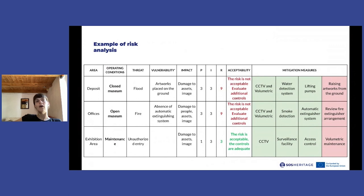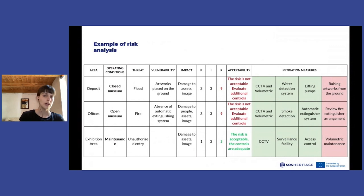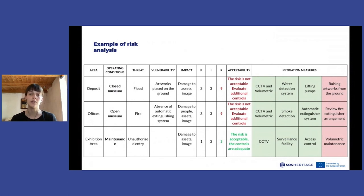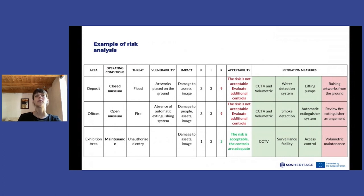The vulnerability identified for each threat is shown next — for example, for flood the vulnerability could be that artworks are placed on the ground in the deposit, or for fire it could be that the museum does not have an automatic extinguishing system. After that there is a description of the impact that each particular threat could have on the museum, such as damage to assets, damage to the image of the museum, damage to people, and so on.